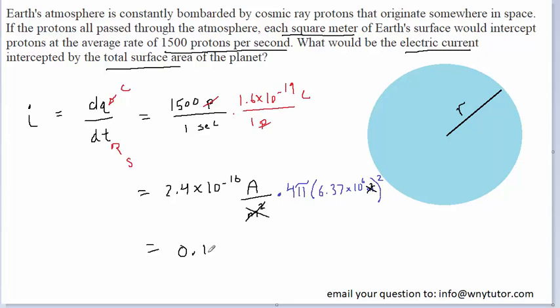When you do this, you should get an electric current of approximately 0.122 amps. And this would represent the total electric current intercepted by the entire surface area of Earth.